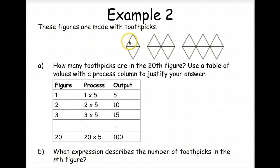In figure one, we're looking at figure one, two, three, and then we want to know some questions. We've got questions about the 20th figure. Well, we have counted one, two, three, four, five toothpicks. And so in figure one, we've got one figure, we've got five toothpicks, so our output is five toothpicks.